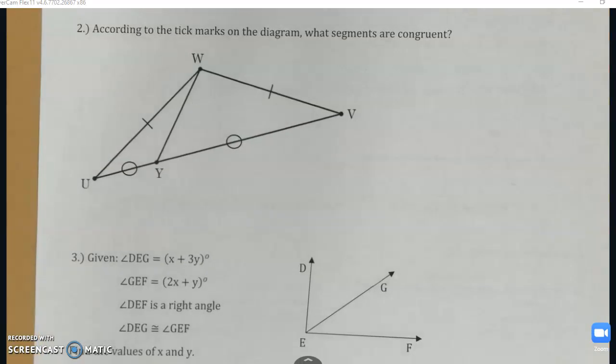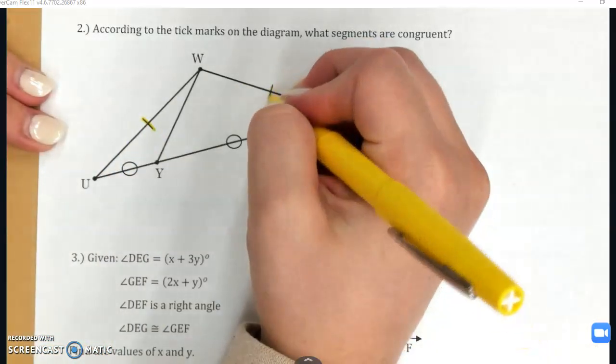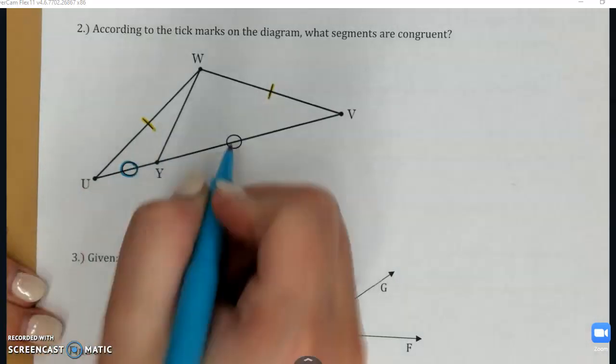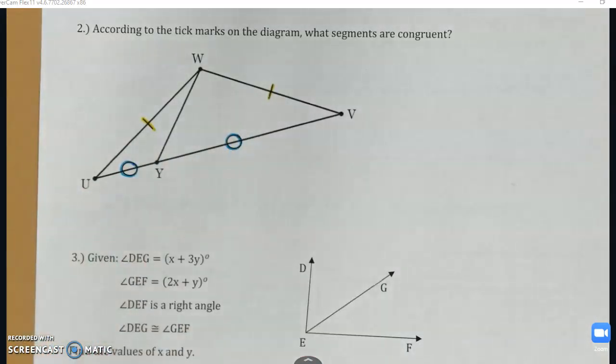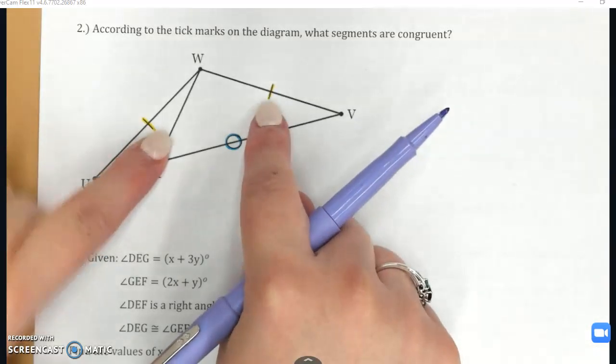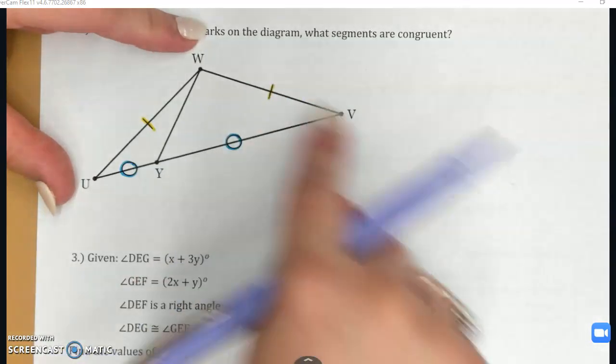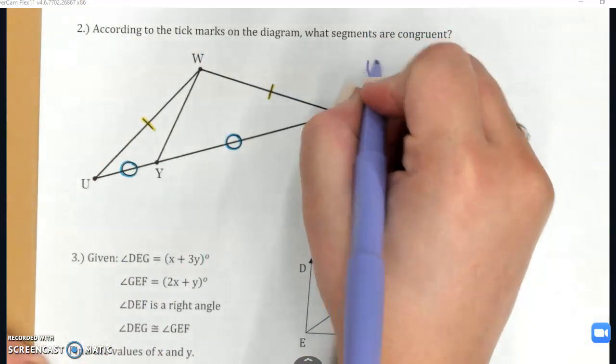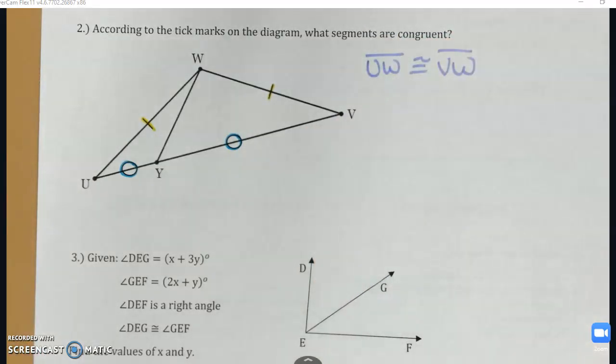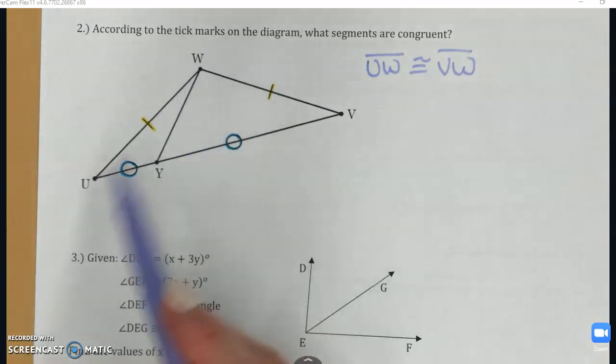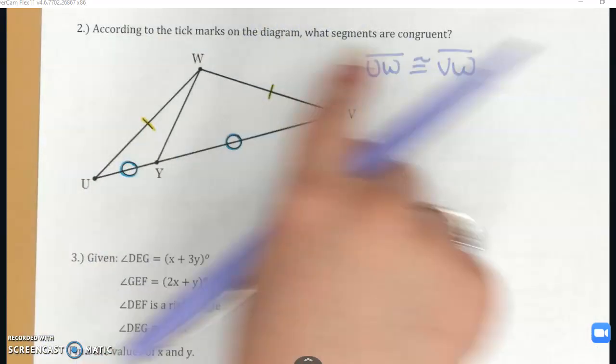Moving on to number two, let's talk about tick marks. So this was, again, another term that was on our vocab page, but we haven't seen it in action yet. So on this diagram, I actually have two different tick marks. I've got these little hashes, one hash each, and I've got these two open circles. Those are both examples of tick marks. You might also see multiple hashes, like two hashes, three hashes, et cetera. If the tick marks match each other, the segments that they're on are congruent. So notice my two yellow pieces, those are on segment UW and VW. Because those tick marks match, that is how I know that those two segments are congruent.